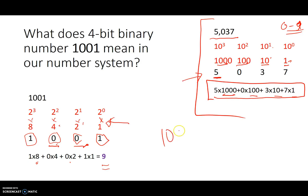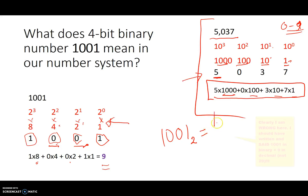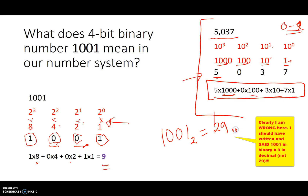So 1001 in the binary number system — sometimes written with a small subscript 2 to indicate it's binary and not to be confused with the decimal 1001 — is equal to 9 in our number system, sometimes written with a subscript 10 to indicate our decimal number system. So 1001₂ equals 9₁₀.